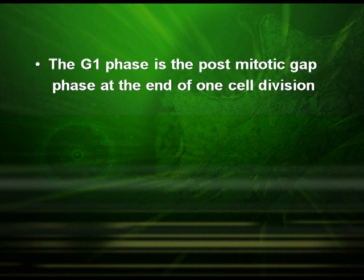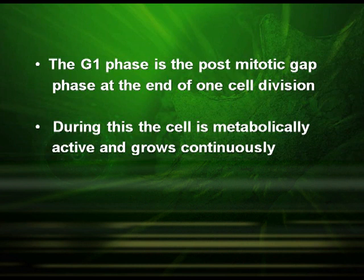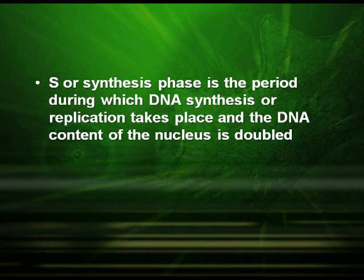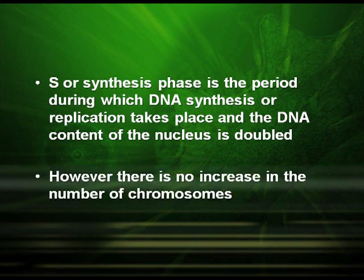The G1 phase is the post-mitotic gap phase at the end of one cell division. During this, the cell is metabolically active and grows continuously. RNA and proteins are synthesized during this period, but there is no synthesis of DNA yet. The S or synthesis phase is the period during which DNA synthesis or replication takes place and the DNA content of the nucleus is doubled. However, there is no increase in the number of chromosomes.